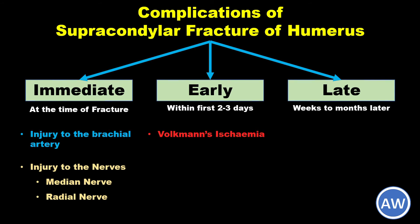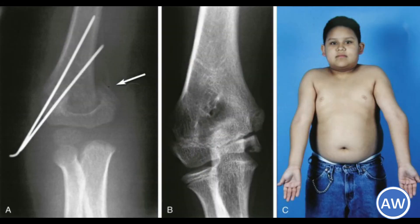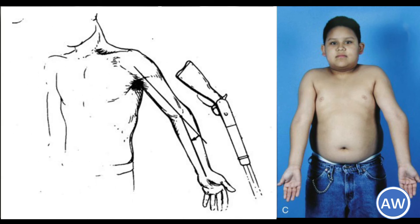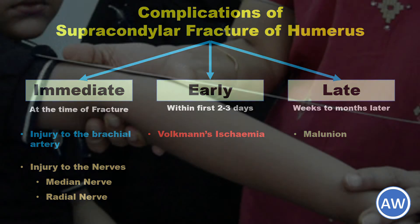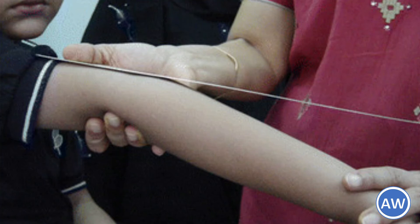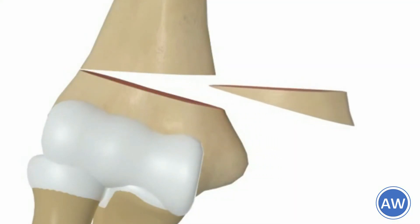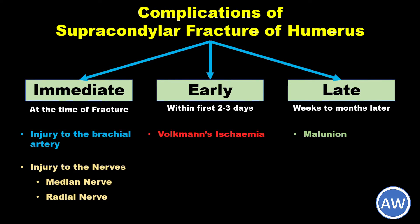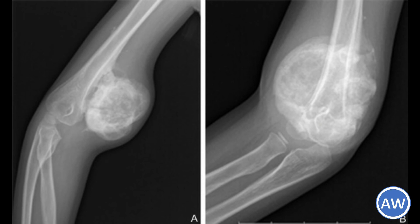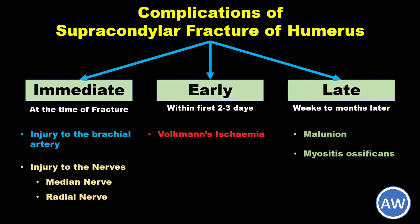The first late complication is malunion, the commonest complication of a supracondylar fracture, resulting in cubitus varus or gun stock deformity. Sometimes the distal fragment unites with an excessive backward tilt resulting in hyperextension at the elbow along with limitation of flexion. A badly deformed elbow should be corrected; treatment is a supracondylar corrective osteotomy. The next late complication is myositis ossificans, an ectopic new bone formation around the elbow joint resulting in stiffness. Massage following the injury is a major factor responsible for it.